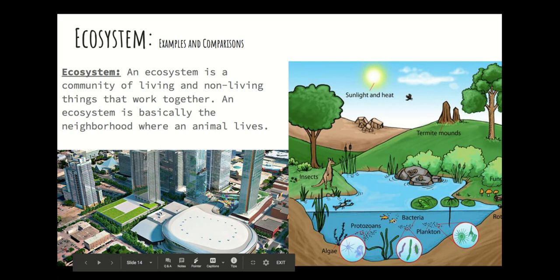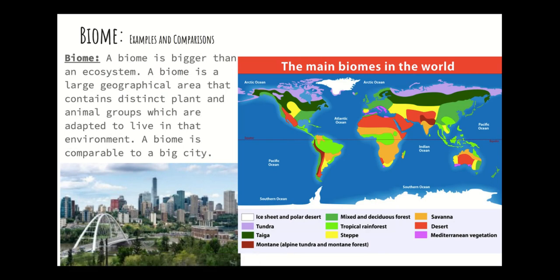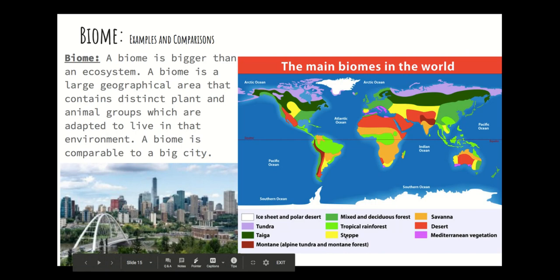Now a biome is a really big place — bigger than an ecosystem. A biome is a large geographical area that contains distinct plant and animal groups which are adapted to live in that environment. A biome is comparable to a big city. So think: habitat is a small home, an ecosystem is a medium-sized neighborhood, and a biome is a giant city covering a much bigger area. Here's a map showing all the different biomes.